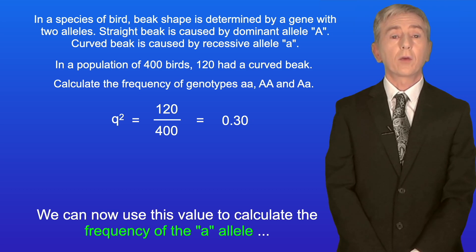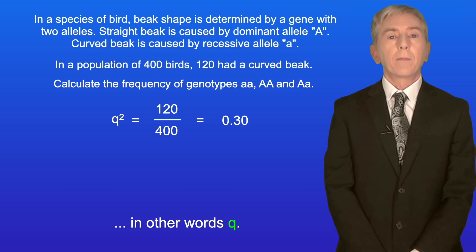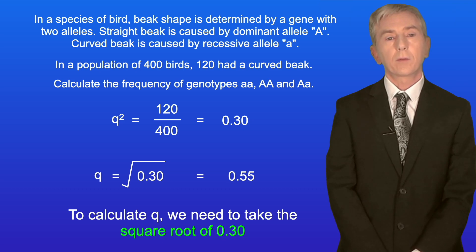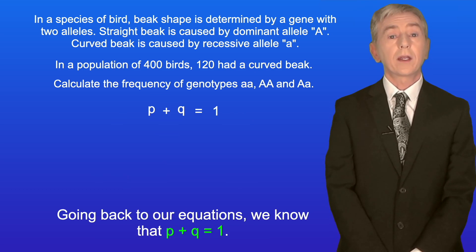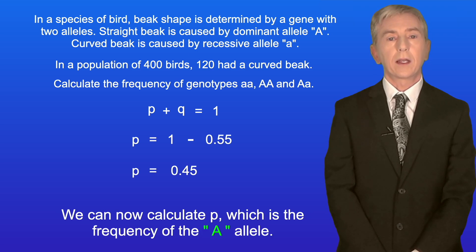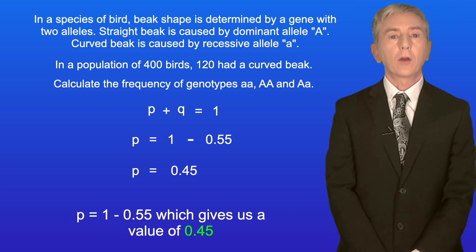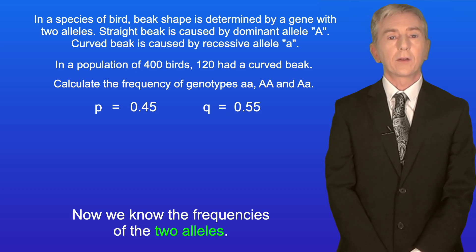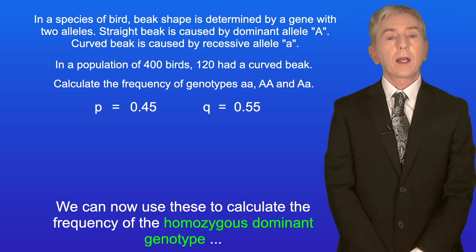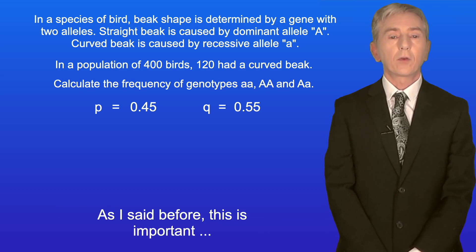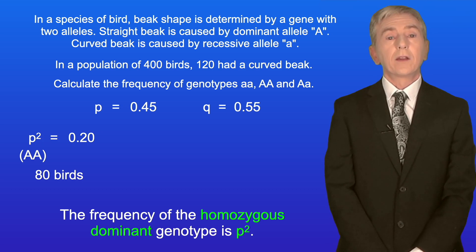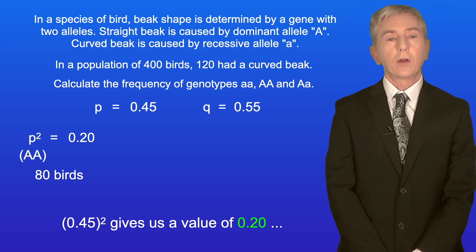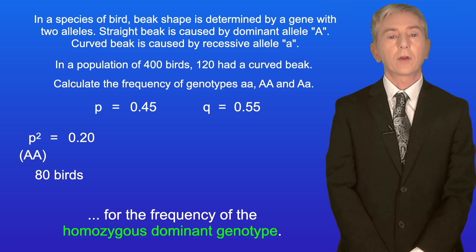So the frequency of the homozygous recessive genotype is 0.30. We can now use this value to calculate the frequency of the lowercase a allele, in other words q. To calculate q we need to take the square root of 0.30, which gives us a value of 0.55 for the frequency of the lowercase a allele. Now going back to our equations, we know that p + q = 1, so we can calculate p, which is the frequency of the uppercase A allele: p = 1 − 0.55 = 0.45. So now we know the frequencies of the two alleles. We can now use these to calculate the frequency of the homozygous dominant genotype and the heterozygous genotype — this is important because we cannot determine these directly from the phenotype. The frequency of the homozygous dominant genotype is p²: 0.45² = 0.20.